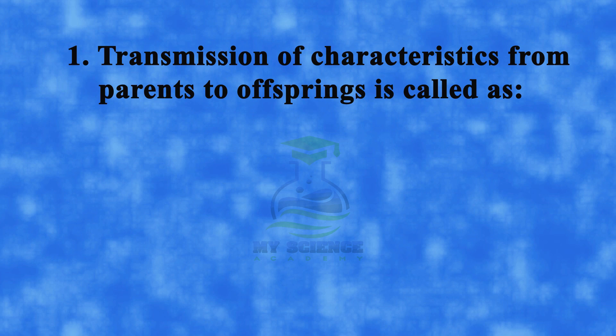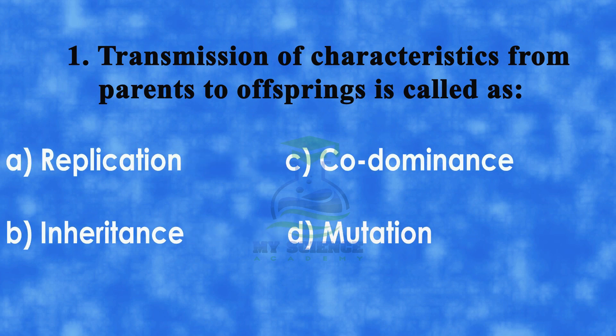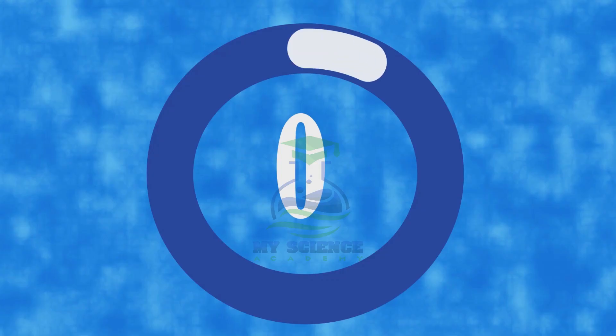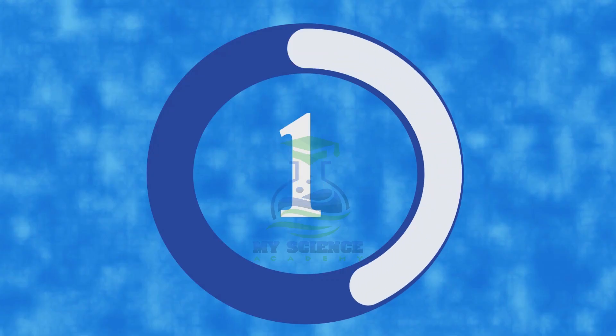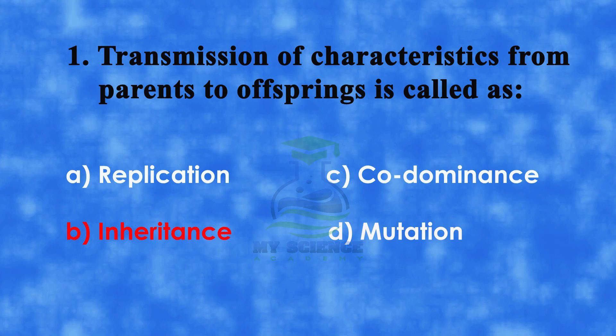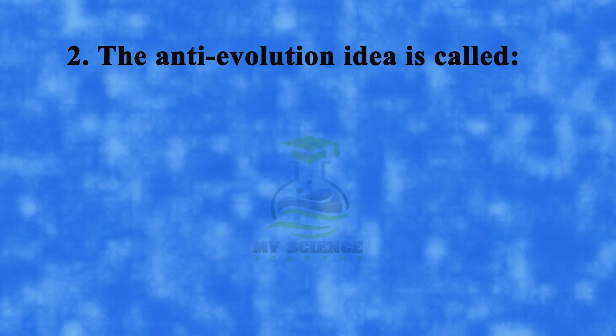Question 1: The transmission of characteristics from parents to offspring is called — A. Replication, B. Inheritance, C. Codominance, or D. Mutation. Correct answer is B. Inheritance.